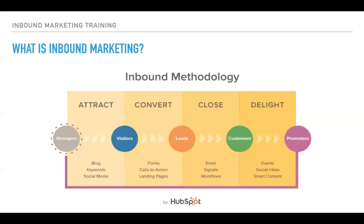This is the simple process of how it works. It has different actions in each specific stage. For the attract stage, you have the blog, keywords, and social media — these are tactics you use to attract those strangers and make them visitors of your website. Then you have the conversion stage, where we use forms, calls to action, and landing pages.